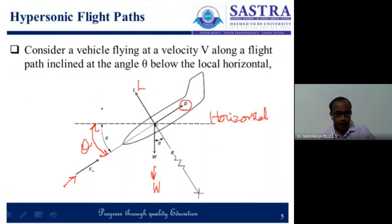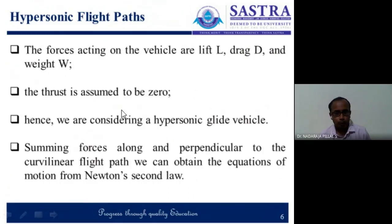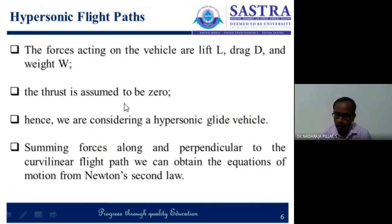We can solve this in the direction of the flight path and perpendicular to the flight path based on Newton's second law of motion — rate of change of momentum is directly proportional to the force. The forces acting on the vehicle are lift force L, drag force D, and the weight W. If we assume that the thrust force is 0, hence this is a gliding vehicle.